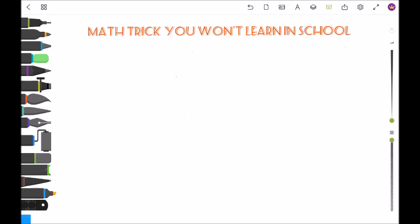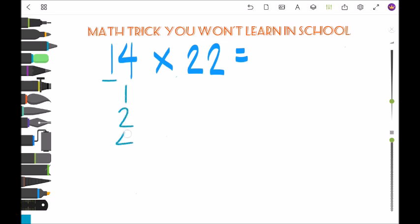Next example is 14 times 22. Again the number is 1, so 1, double is 2, double is 4, double is 8. We stop here because we have a total of 14. So 8 plus 4 is 12 and plus 2 is 14, so we end here.